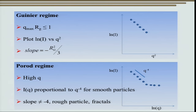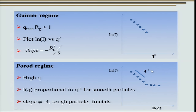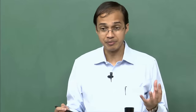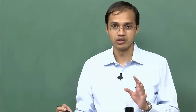In the Porod regime at high Q — not the wide angle regime — ln(I) is proportional to Q⁻⁴, and from the slope we can get information about the shape of the particle. This is exactly what we did in small angle X-ray scattering, and the same concept can be directly applied to small angle neutron scattering.